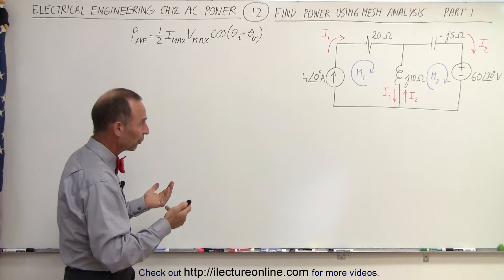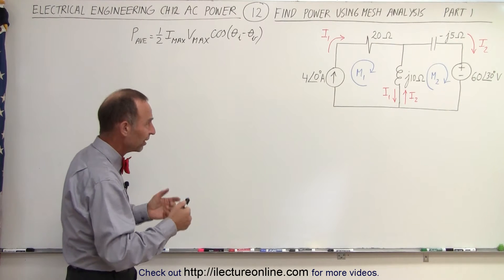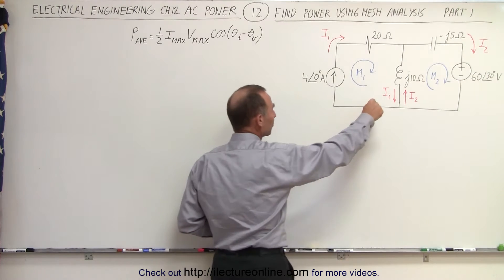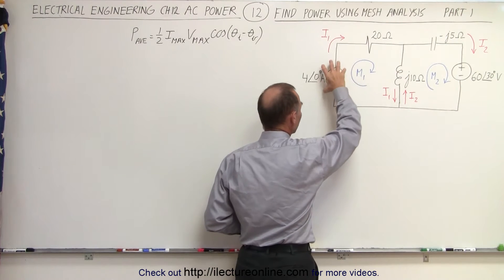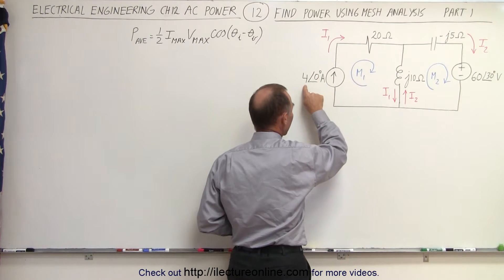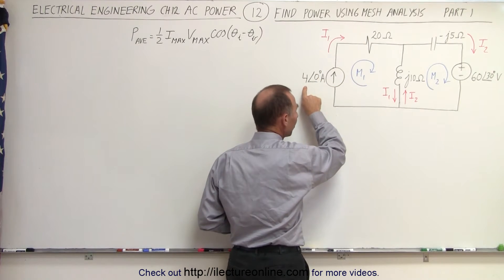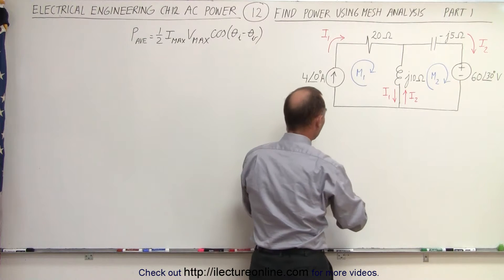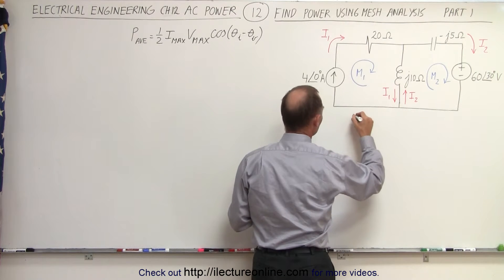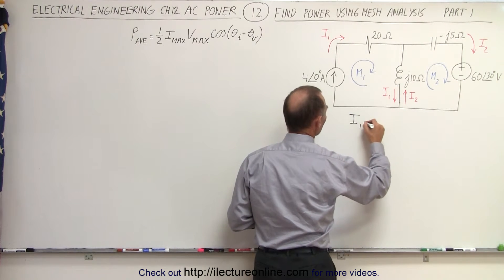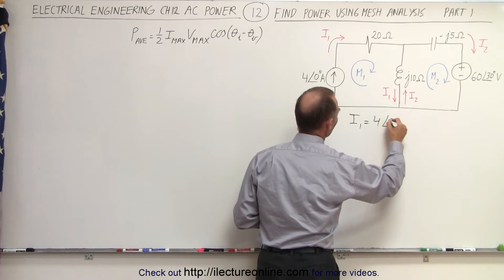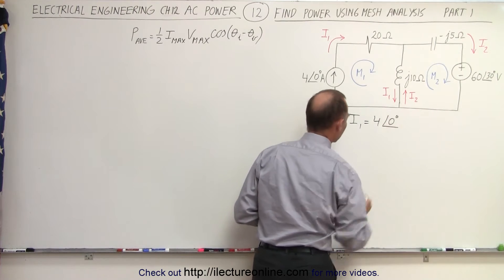First, we're going to do some mesh analysis. Since in the first mesh we have a current supply supplying four amps, we can say that I1 must therefore be four amps. So I1 equals four amps with a phase angle of zero degrees.